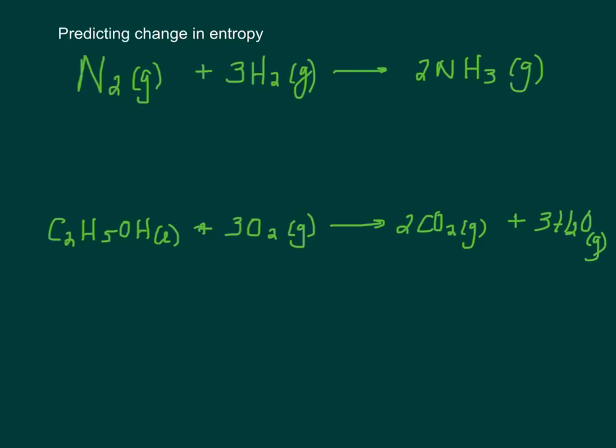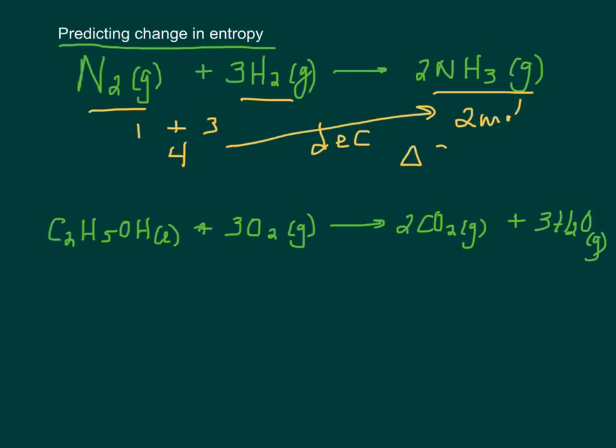So if we look at a couple equations, let's see if we can predict the change in entropy. Do we think that the entropy of this reaction is increasing or decreasing? Well, what you want to do is you want to only look at the moles of gas on both sides. On this side, we have one plus three. We have four moles of gas over here and two moles of gas over there. Entropy is decreasing. So we say that delta S for this reaction is going to be negative.